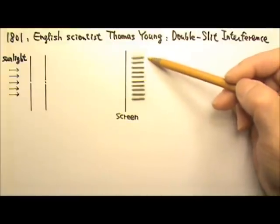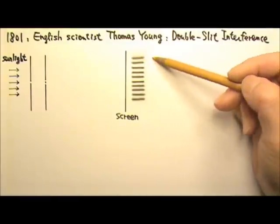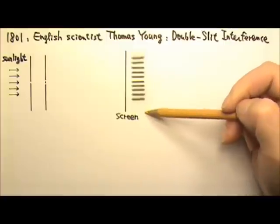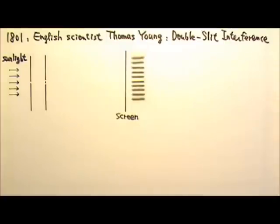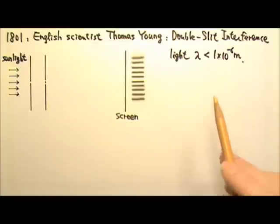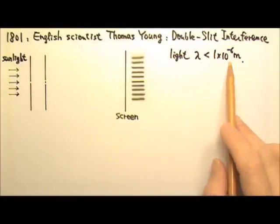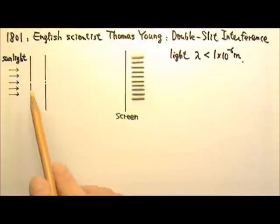However, Thomas Young saw evenly spaced bright and dark fringes on the screen like these. This means light does reach behind the obstacle. We usually see shadows behind obstacles because light waves have very short, less than one micrometer wavelength. So normal obstacles are too big for light to diffract around. And that's why Thomas Young had to use very narrow slits to observe the wave properties of light.